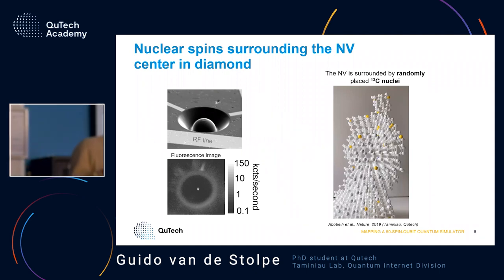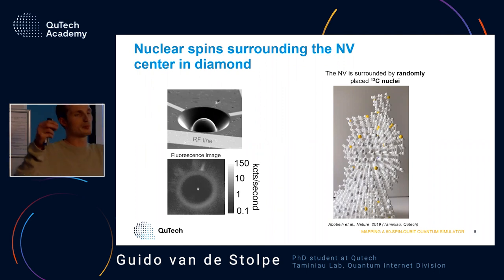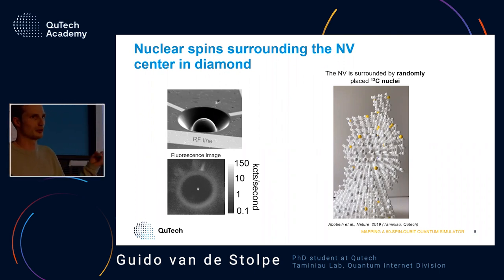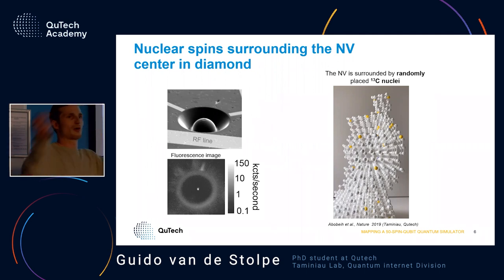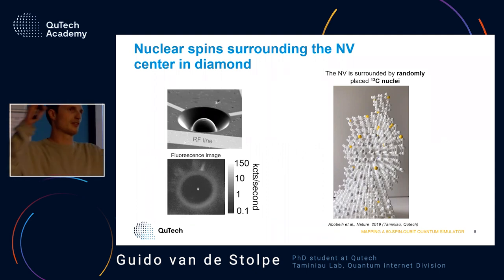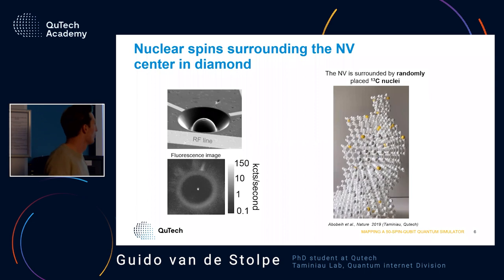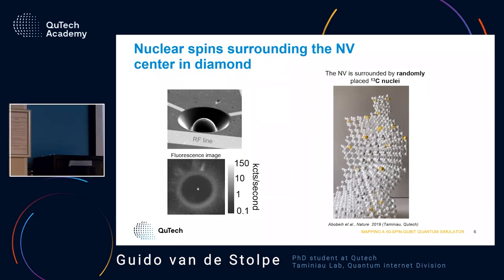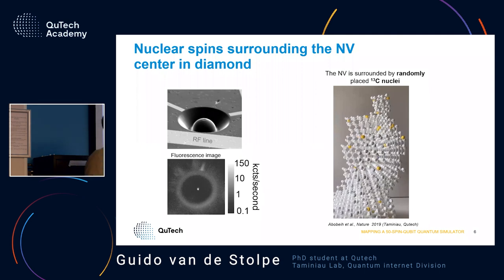Looking inside a diamond lattice, most of the atoms that make up the diamond are carbon-12 isotope and they don't have spin, so we cannot use them as qubits. But about one percent is actually carbon-13 isotope — a spin-half particle — but they are randomly scattered through the lattice so we don't know where they are. A few years ago we imaged the 27 nuclear spins closest around this NV center.